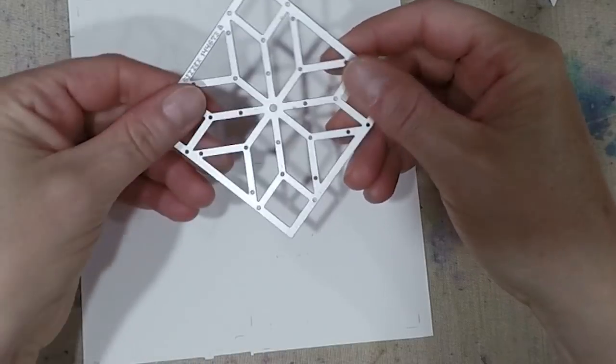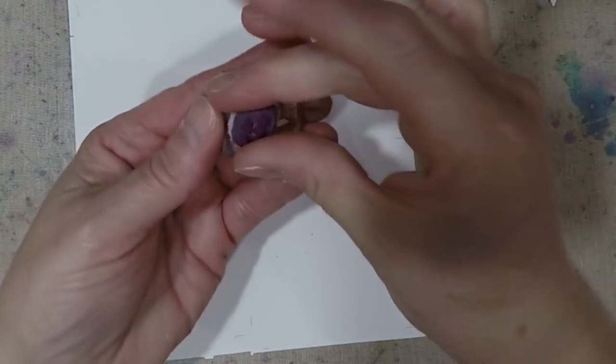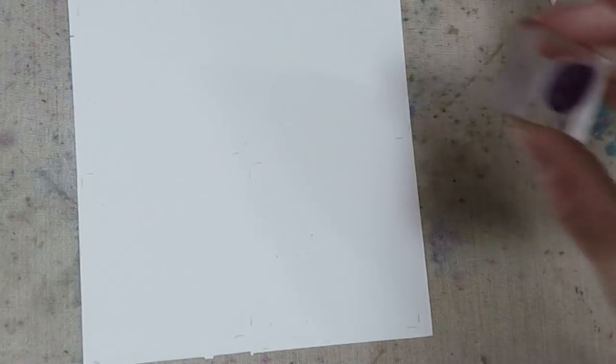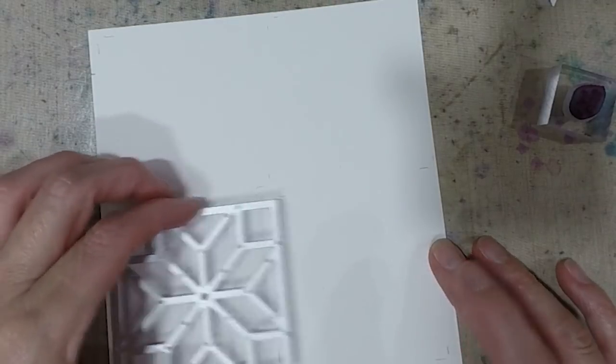So first I'm using this retired die set from Stampin' Up! It's just a star quilt and it cuts all the pieces out for the quilt or for the star. So what I wanted to do is I wanted to create some red, white and blue paper so that I could make this star quilt kind of festive for the 4th of July holiday.